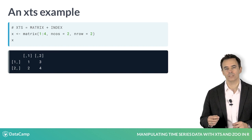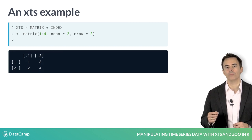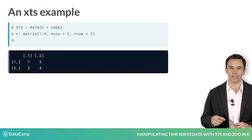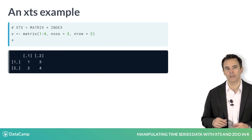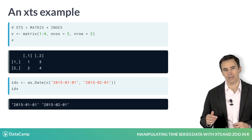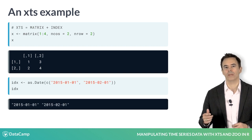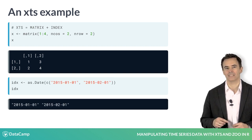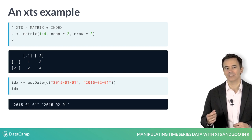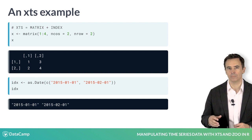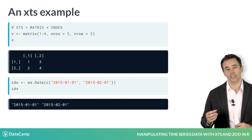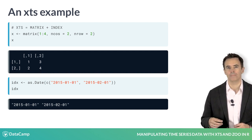To illustrate, we'll create a simple matrix called X. Each row of our data is an observation in time. To track these observations, we have dates in an object called IDX. Note that this index must be a true time object,